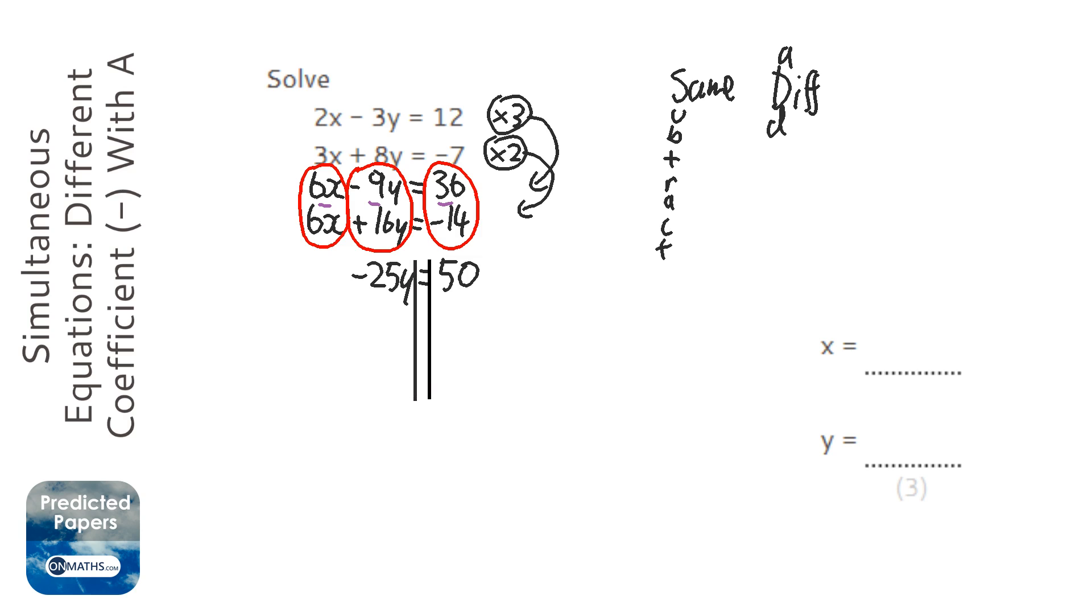So I'm going to put my lines down the side. And we're going to divide both sides by minus 25. And you end up with y equals, so that's going to be a minus, and it's going to be minus 2.